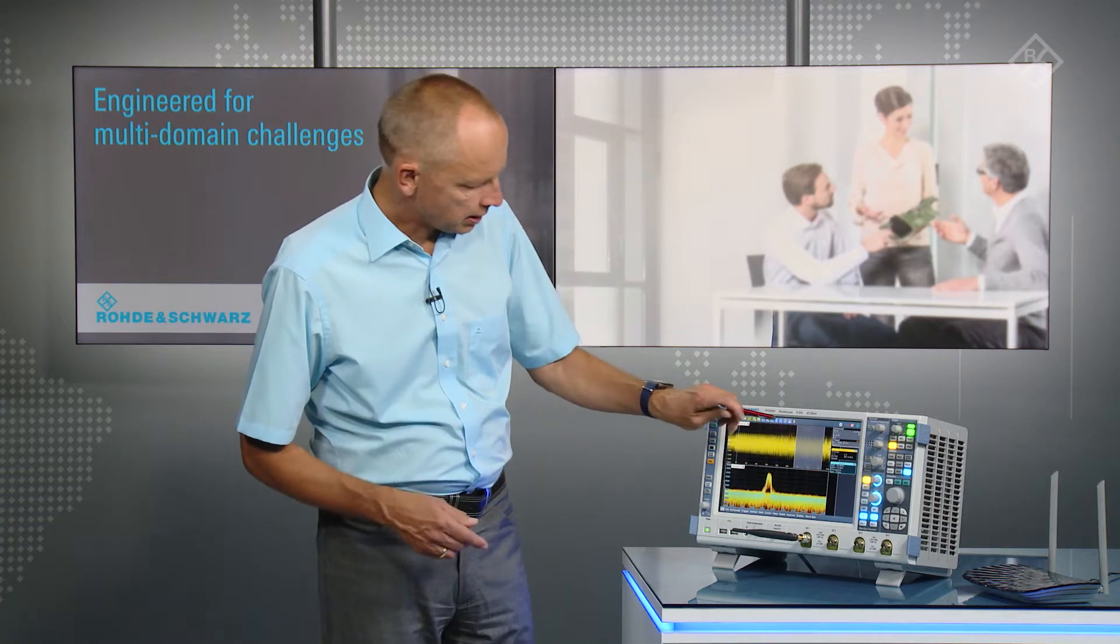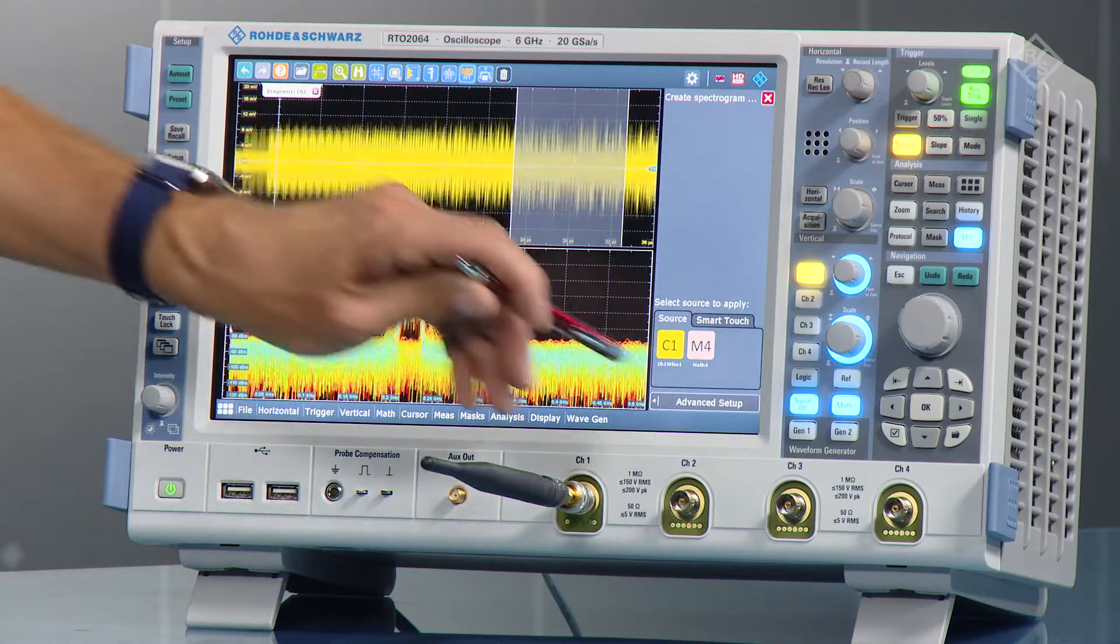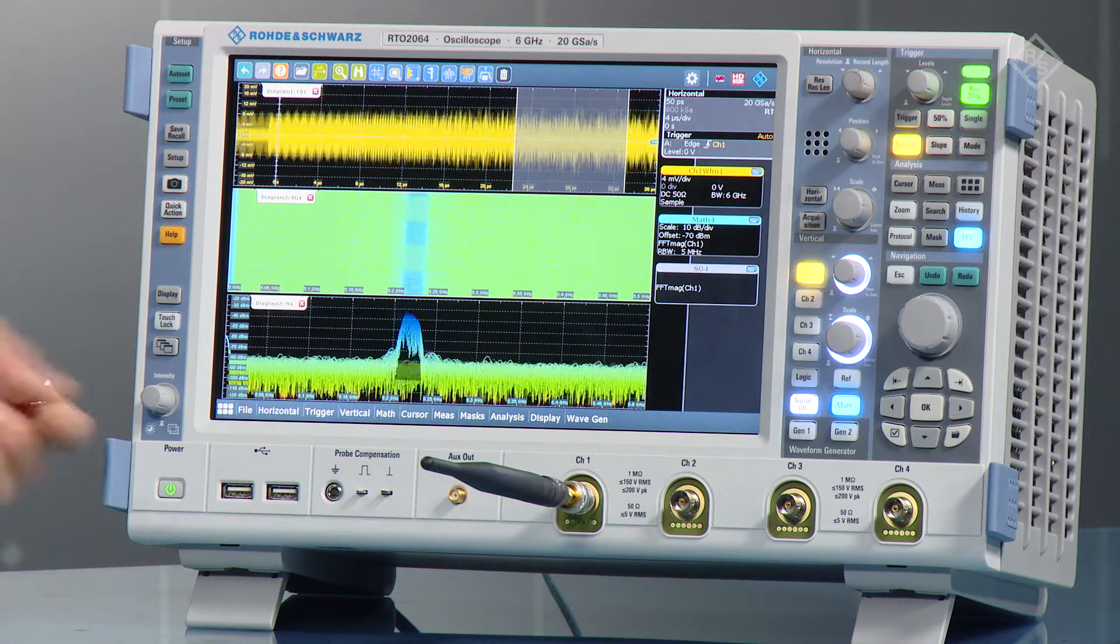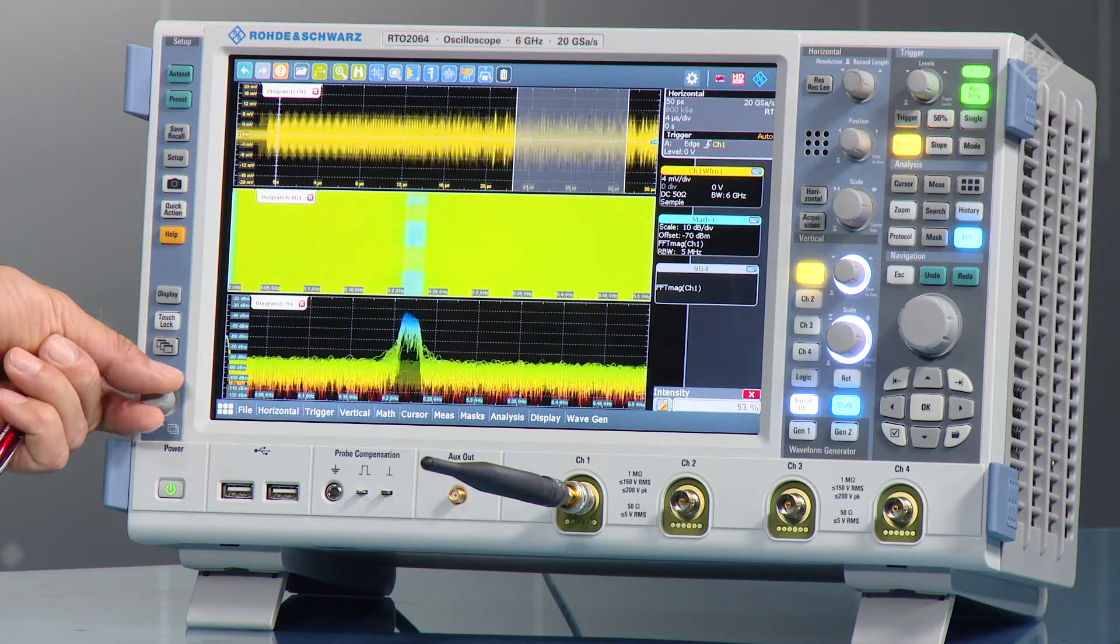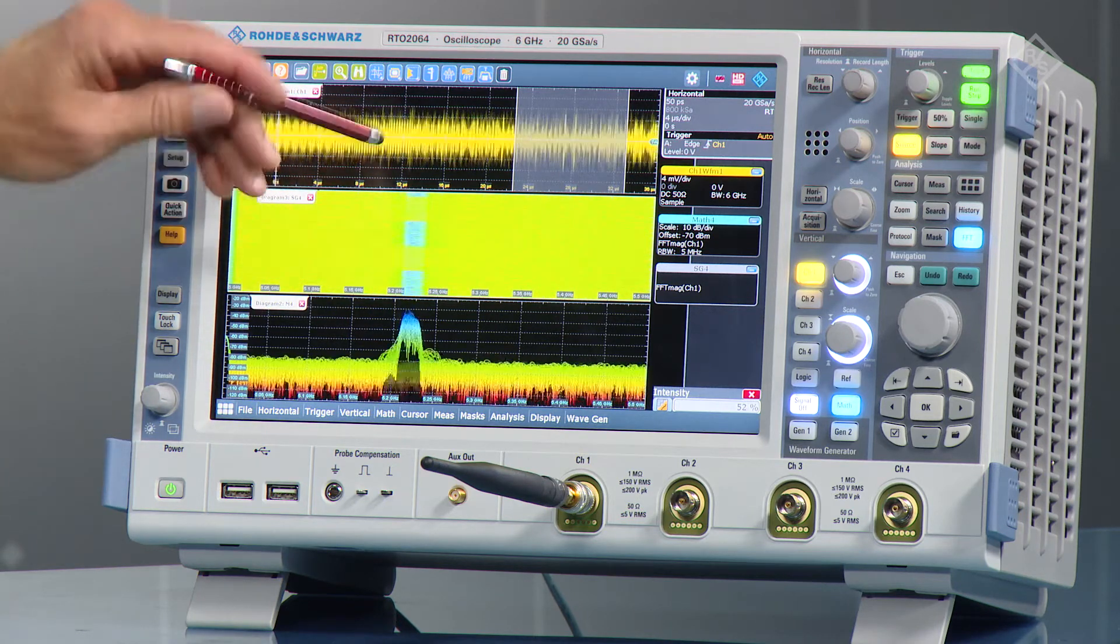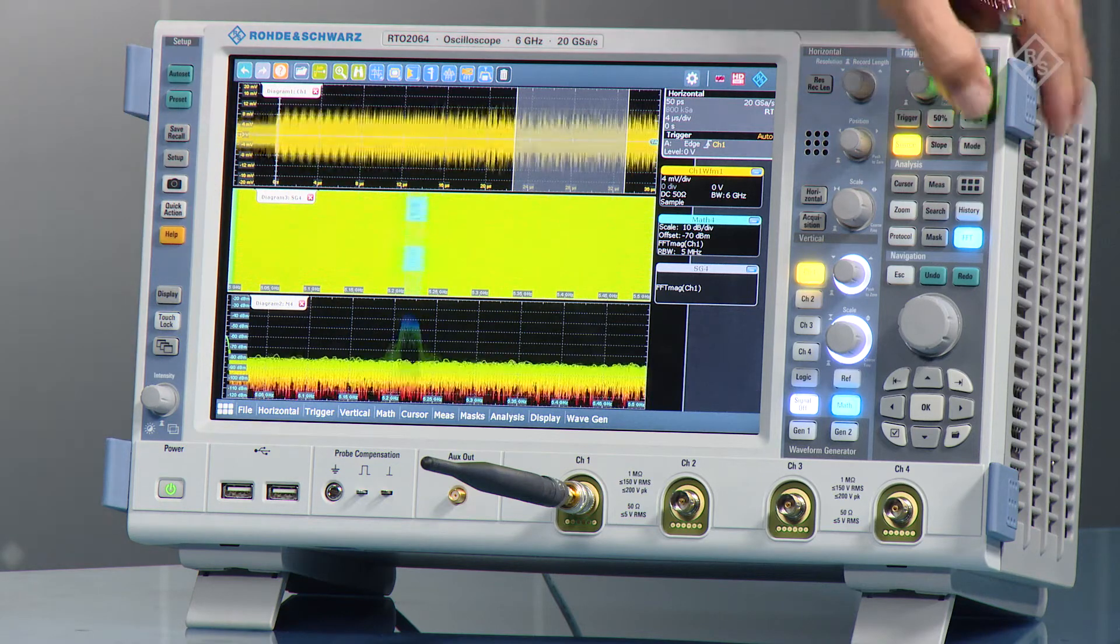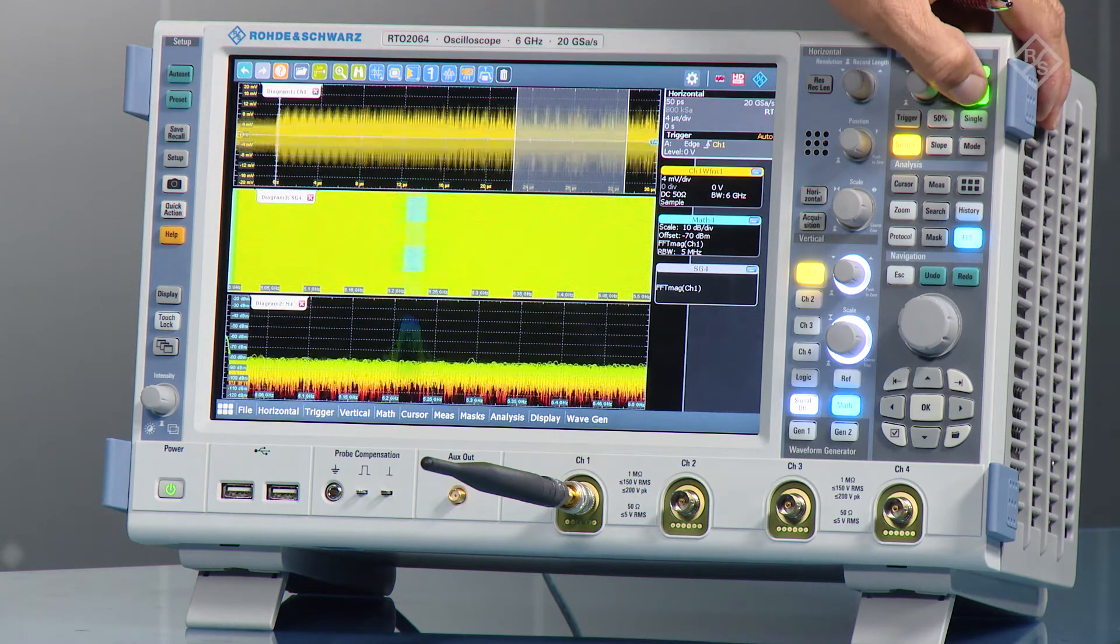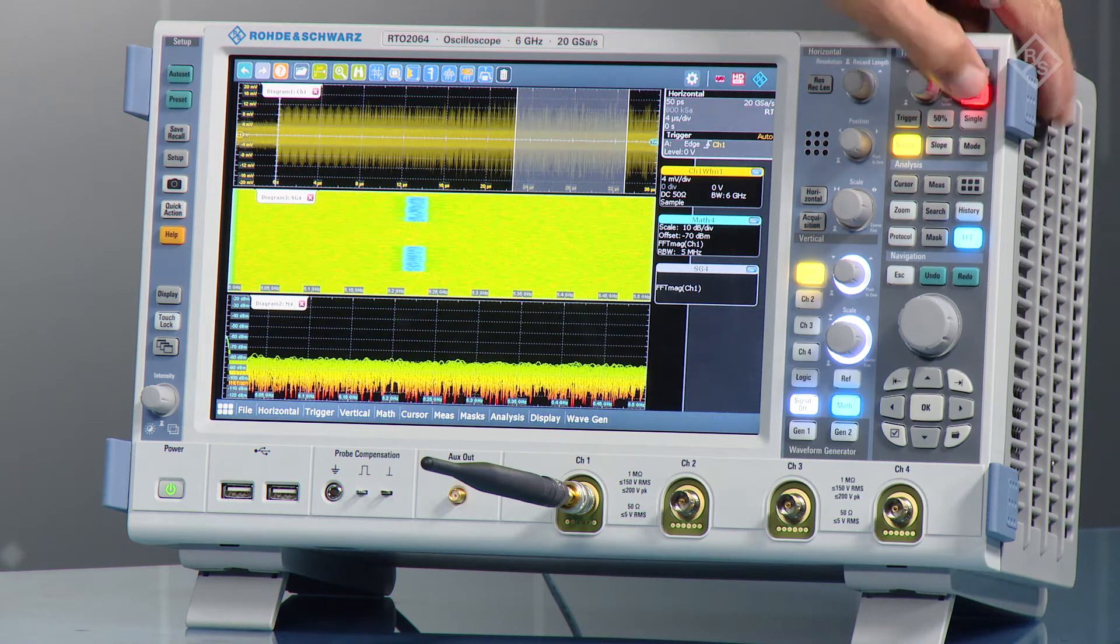To do this, just select spectrogram and select the channel. You would have the spectrogram and, of course, you can select the colors of the spectrogram. And you clearly see the time variation of the FFT and of the 5 GHz signal that you see here.